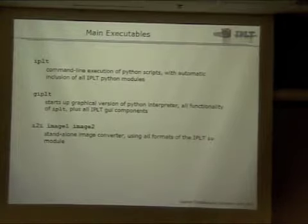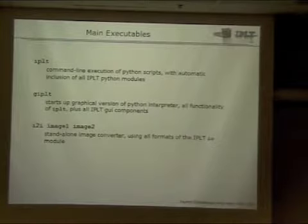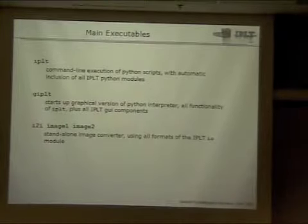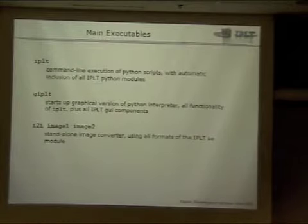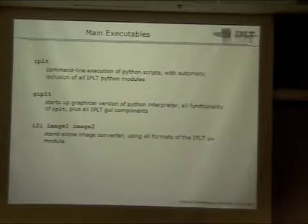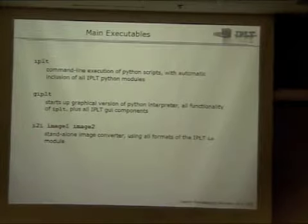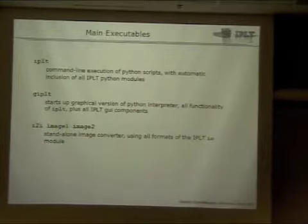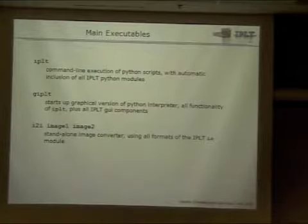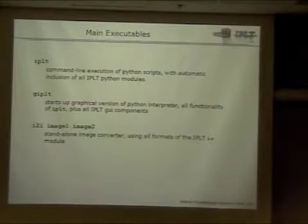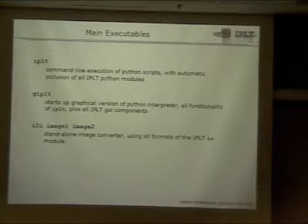If you interact with the program, there are basically two ways. You have a command-line IPLT in batch mode — no graphics — so you can submit a job, let it run for hours, and even log off the computer. Then we have the graphical version with all of that plus a lot of graphical libraries at your disposal. And finally, there's a little utility called I2I. You give it an input and an output image, and the C++ program is about five lines. It's extremely powerful because from the extension it opens the image and saves it in another format — a very convenient image converter using all image formats in IPLT.